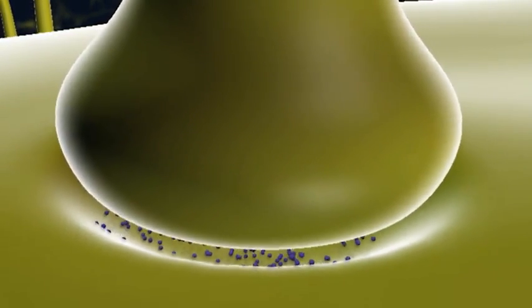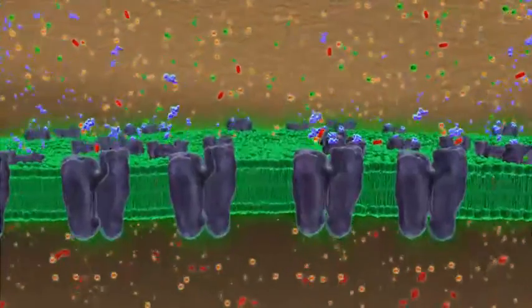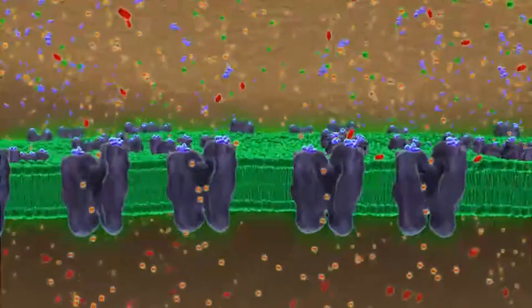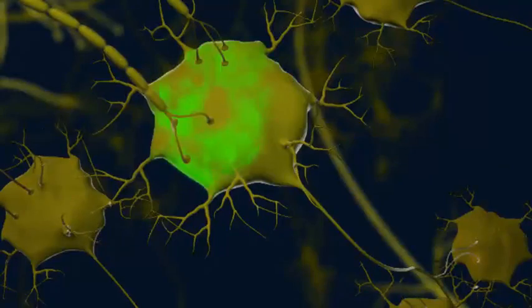Once the neurotransmitter activates the receiving neuron's receptors, the message has been sent and the transmitter is no longer needed in the synapse. In fact, if the transmitter remained in the synapse, it would repeatedly bind to the postsynaptic receptors, activate them, and keep inducing EPSPs or IPSPs.